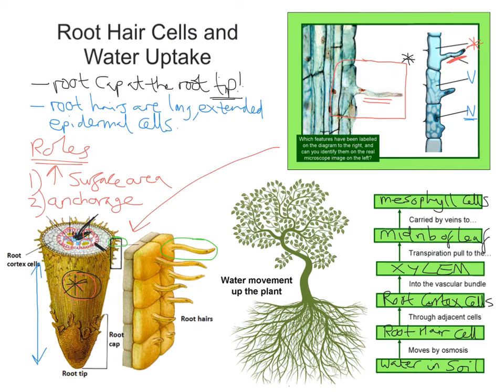So we've had a quick video about root hair cells and water uptake. We've got the root cap at the very tip of a root — a protective layer of cells. The rest of the root is covered by the epidermis. Root hairs are long, extended epidermal cells found a little way up from the root, continually replaced as the root grows. The two main roles are to increase the external surface area for absorption of water by osmosis and mineral ions by active transport, and to provide anchorage for the plant. Water moves from the soil via osmosis to the root hair cell, through adjacent root cortex cells, into the xylem within the stem, up to the midrib of the leaf via transpiration, then carried by the veins to the mesophyll cells. Hope all that helps, thank you.